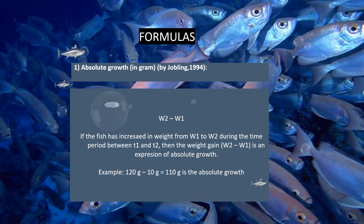Absolute growth is expressed in grams as Weight 2 minus Weight 1. If the fish has increased in weight from Weight 1 to Weight 2 during the time period between T1 and T2, then the weight gain, which is Weight 2 minus Weight 1, is an expression of absolute growth. Example: Weight 2 is 120 grams, Weight 1 is 10 grams, so 120 grams minus 10 grams equals 110 grams, which is the absolute growth.